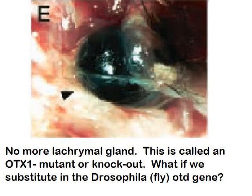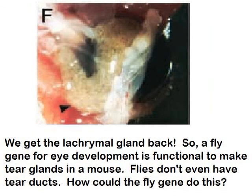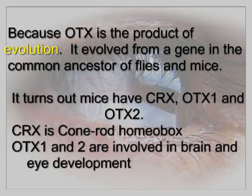What if we substitute in the Drosophila fly OTD gene? We get the lacrimal glands back. So a fly gene for eye development is functional to make tear glands in a mouse — and flies don't even have tear ducts. How could the fly gene do this? Because OTX is the product of evolution — it evolved from a gene in the common ancestor of flies and mice.